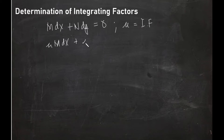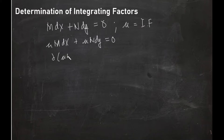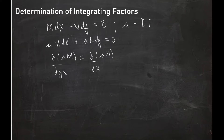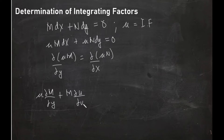If I multiply by mu, I'll have mu M dx plus mu N dy is equal to zero. The concept of the integrating factor is that when you have determined it, your differential equation becomes exact. If it's exact, then the partial derivative of mu M with respect to y would be equal to the partial derivative of mu N with respect to x. Applying the product rule, this will be mu times the partial derivative of M with respect to y plus M times the partial derivative of mu with respect to y, equal to mu times